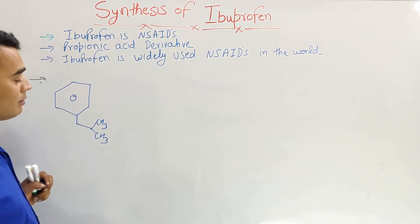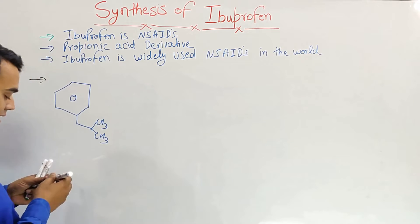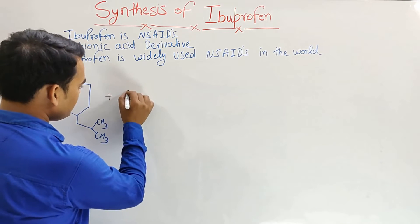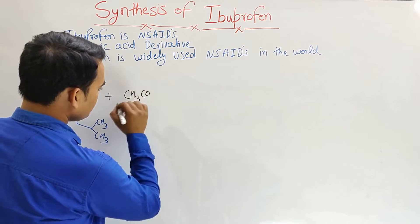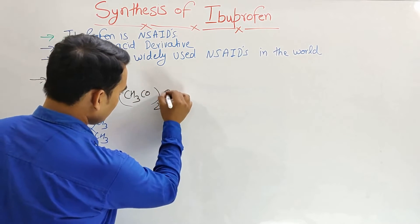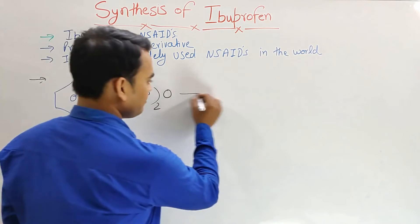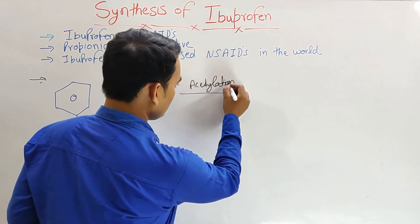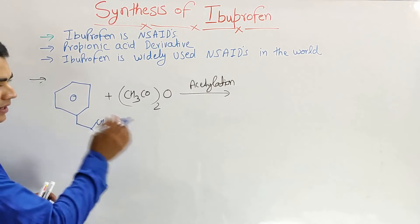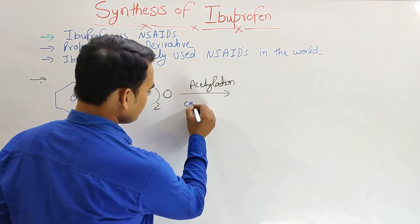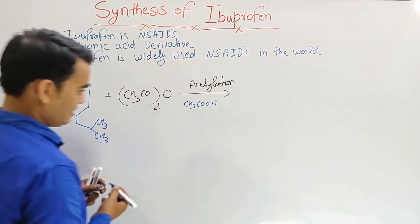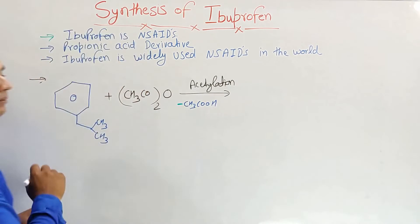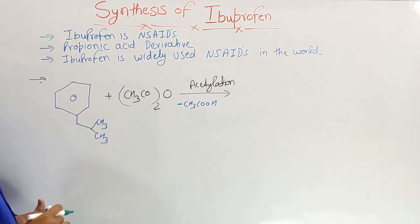When isobutylbenzene undergoes acetylation in the presence of (CH3CO)2O — acetic anhydride — the acetyl group (CH3C=O) gets attached at the para position. The CH3COOH is eliminated as a byproduct during this acetylation step.